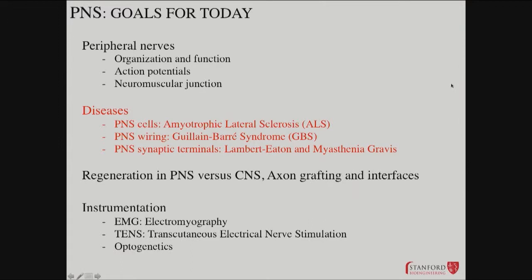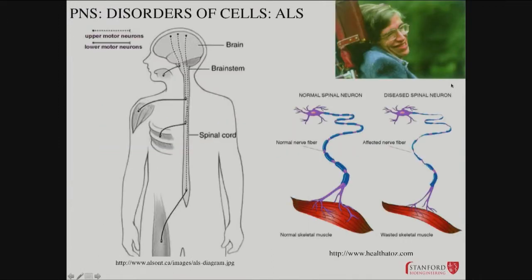The first one is amyotrophic lateral sclerosis, also known as Lou Gehrig's disease, talking about a famous sufferer of that disorder. This highlights the upper motor neuron versus lower motor neuron distinction. The upper motor neurons live in the brain and project down to the spinal cord, where they make synapses on cells that live in the spinal cord but then project out to the body. The upper motor neurons and the lower motor neurons are altered in different disease states.